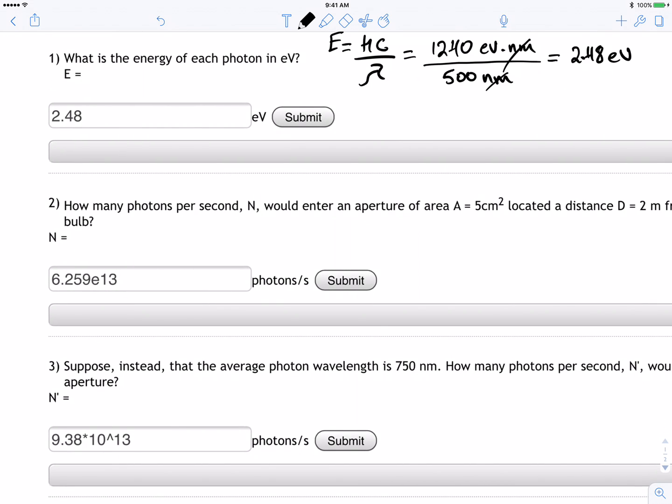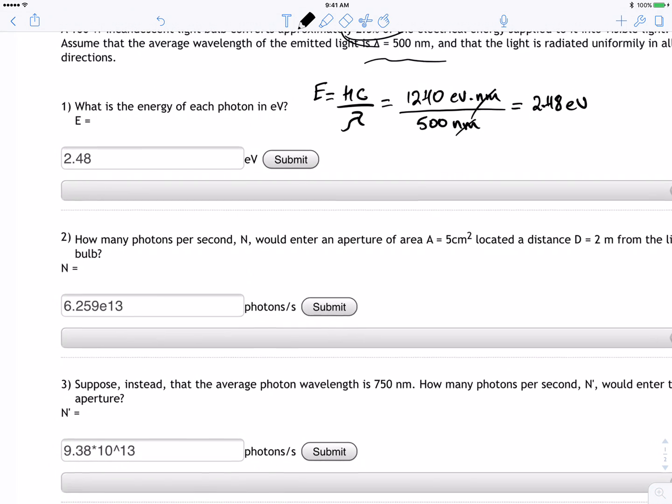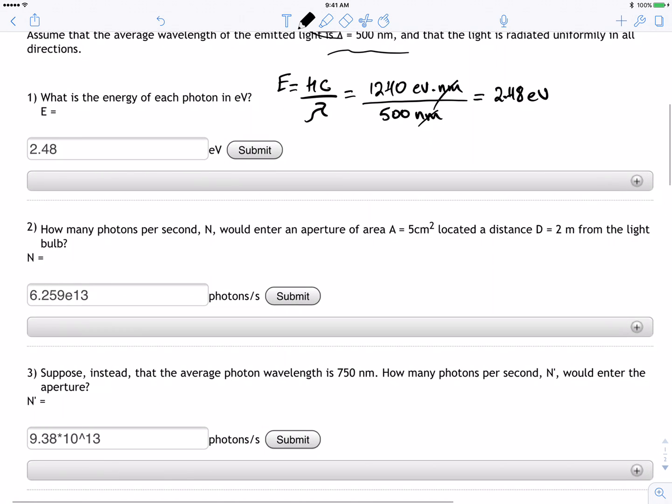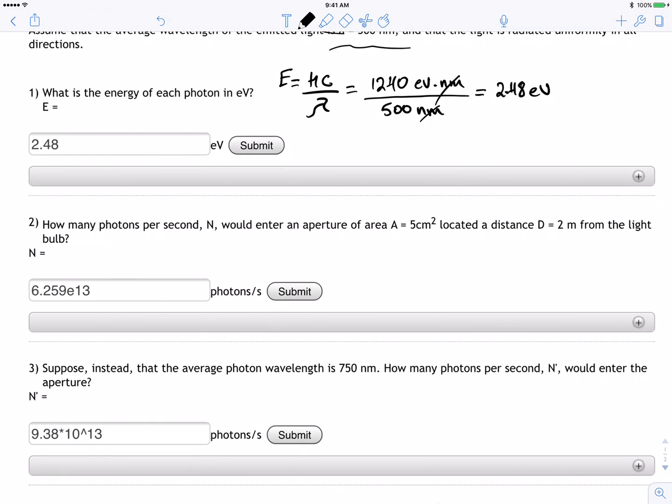Now this is the tricky question. How many photons per second N? We can get N from this equation: E equals N times h times c divided by lambda.